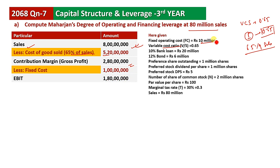EBIT is earning before interest and tax. EBIT is 28 million minus 10 million fixed cost, which equals 18 million dollars EBIT. Now for interest: we need to pay on 20 million dollars. The bond value has interest rates of 10% and 12%.